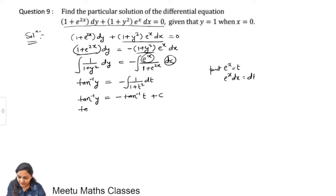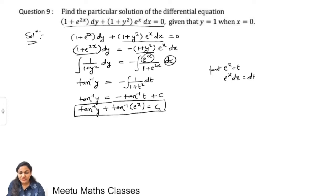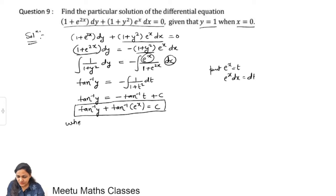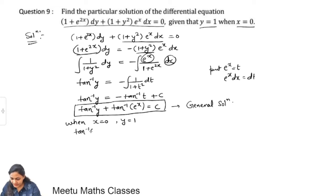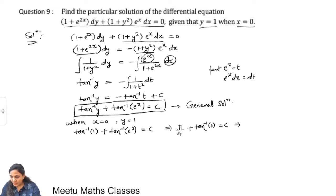Replace back t = e^x. The general solution is: tan⁻¹ y + tan⁻¹(e^x) = c. Now applying the initial conditions: when x = 0 and y = 1, we substitute: tan⁻¹(1) + tan⁻¹(1) = c, giving π/4 + π/4 = c, so c = π/2.